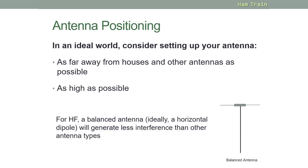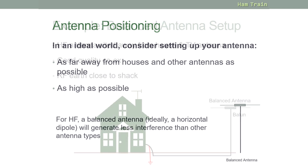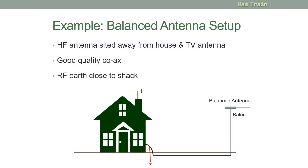Antenna positioning matters. In an ideal world, you would like to set your antenna up as far away from houses and other antennas as possible, and as high as possible. For HF, a balanced antenna – ideally a horizontal dipole – will generate less interference than other antenna types. Here's an example of a good setup using a balanced antenna. Here you can see the HF antenna is sited high away from a house, also far enough away from the TV antenna to reduce interference. We're using good quality coax, and there is an RF earth very close to the shack.